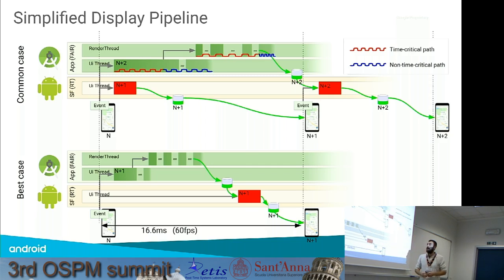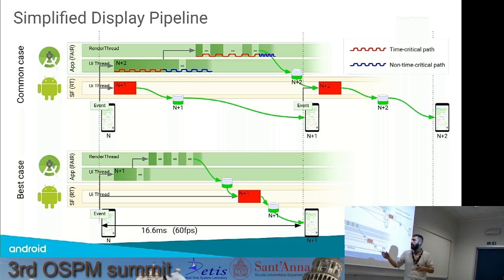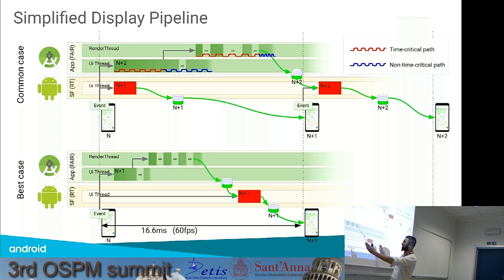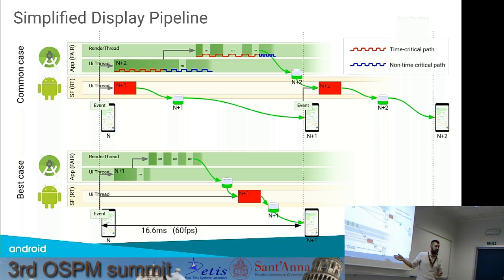In Android, on Pixel devices, a trick is used to reduce overall latency for the display pipeline by playing with delays of the VSync. The VSync event for the application is postponed a little bit, and the VSync of Surface Flinger is postponed a bit more. The result is that, when the application workload is not huge, we are able to complete the whole pipeline in just a single time frame, which greatly reduces total latency.